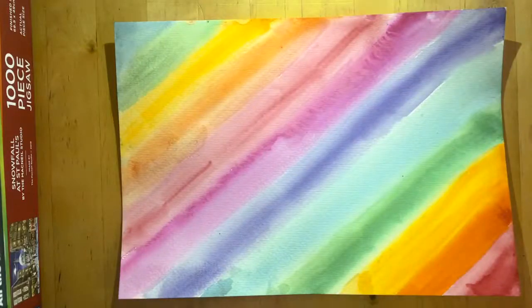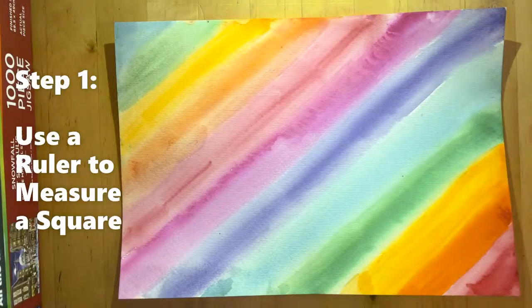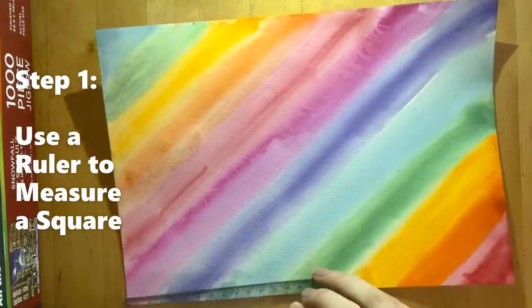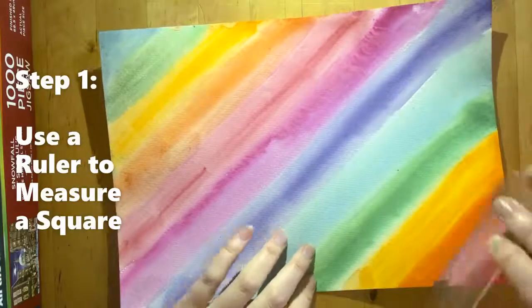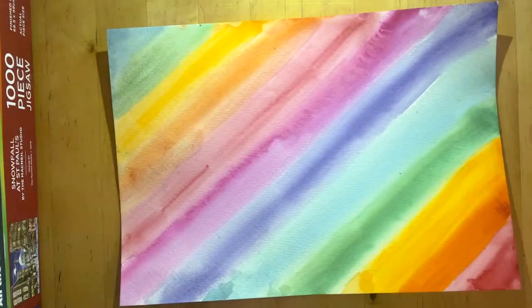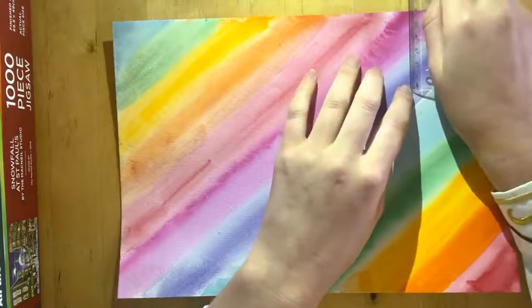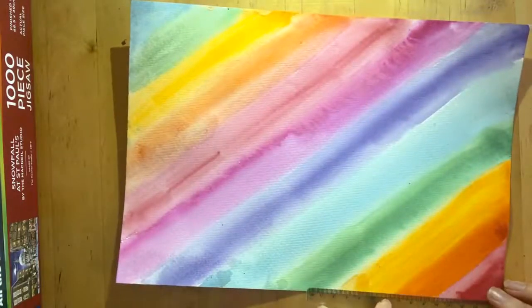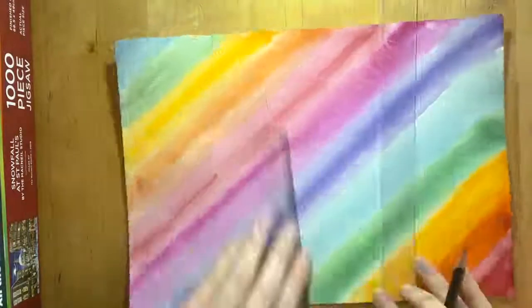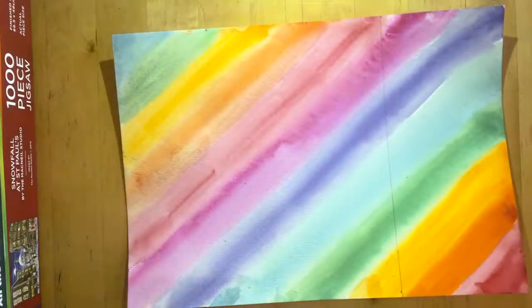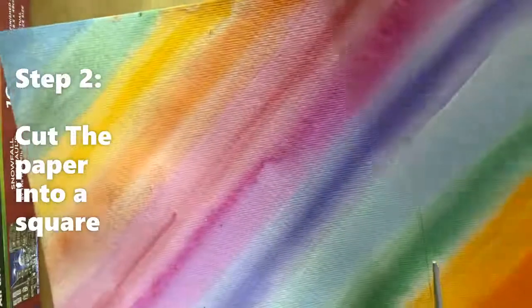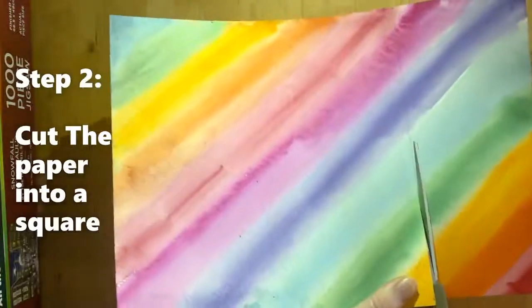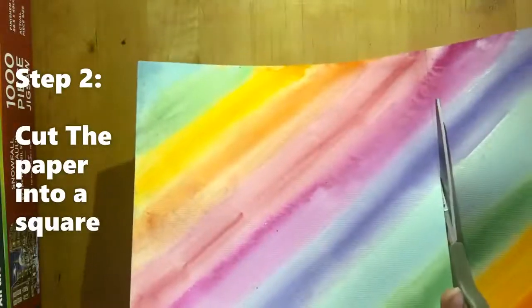Here's my piece of paper that I painted earlier. Now we're going to cut it into a square. So I'm going to use my ruler to measure out how big it is. Now I'm going to follow that line. I'm going to cut it into a square.